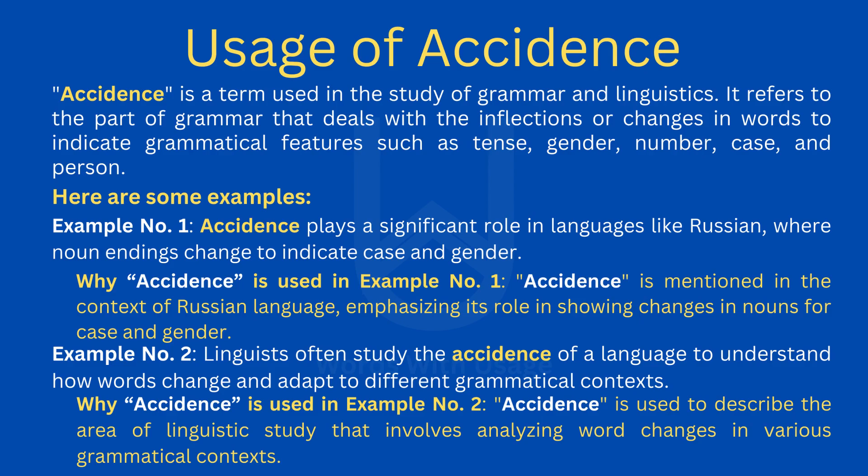Here are some examples. Example number one: ACCIDENTS plays a significant role in languages like Russian, where noun endings change to indicate case and gender. ACCIDENTS is mentioned in the context of Russian language, emphasizing its role in showing changes in nouns for case and gender. Example number two: Linguists often study the ACCIDENTS of a language to understand how words change and adapt to different grammatical contexts. ACCIDENTS is used to describe the area of linguistic study that involves analyzing word changes in various grammatical contexts.